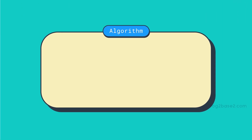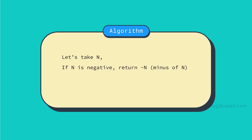Now let us see the algorithm to find the absolute value of a number. First of all, let the number be n. If n is negative, the absolute value of n is minus n. Else, the absolute value of n is n itself.